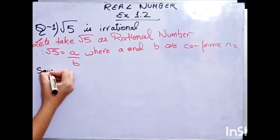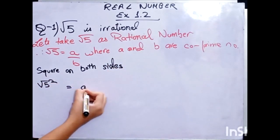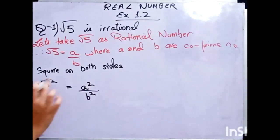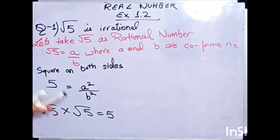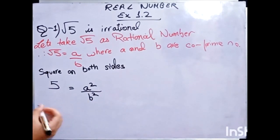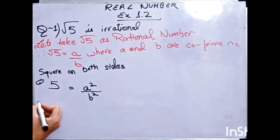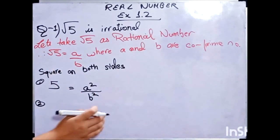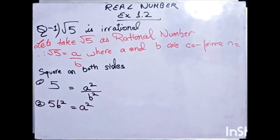Now, we square both sides. So root 5 squared equals A squared by B squared, and root 5 squared equals 5, because root 5 into root 5 equals 5. Now we will bring B squared to this side. So we multiply across: 5B squared is equal to A squared.